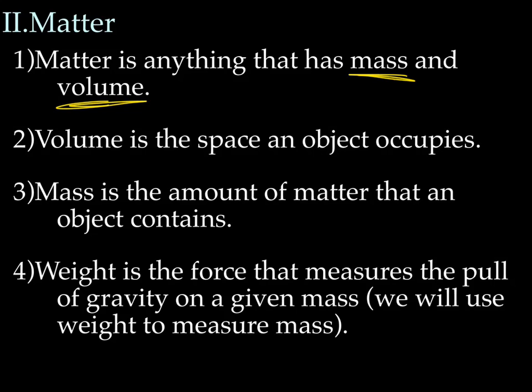Mass is the amount of matter that an object contains — how much stuff makes up that chair, that book, that phone, that computer. The more stuff that makes it up, the heavier it's going to be. Weight is the force that measures the pull of gravity on a given mass, and we're going to use weight to measure mass. So volume is the space something takes up, and mass is the amount of matter an object contains.